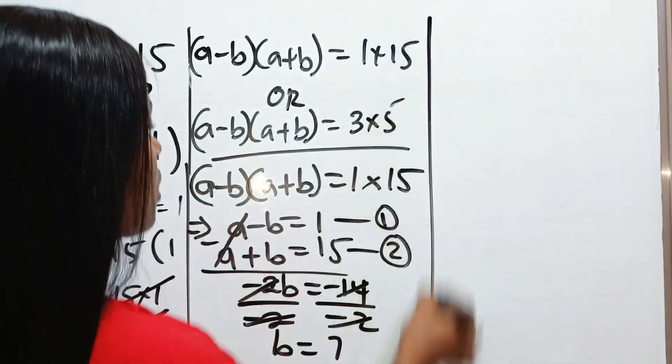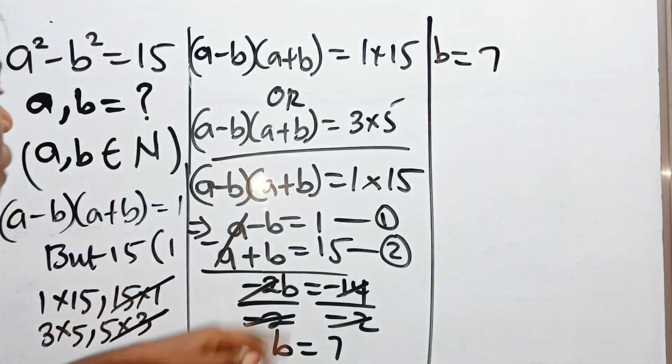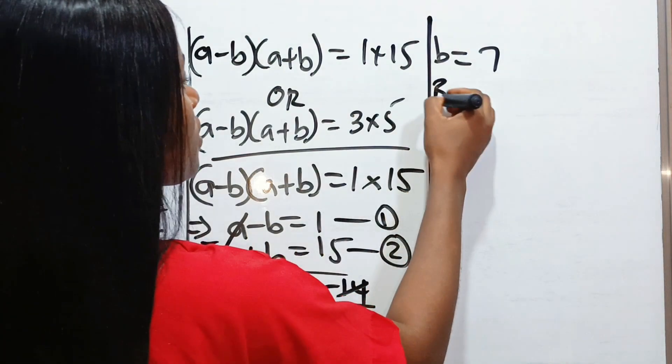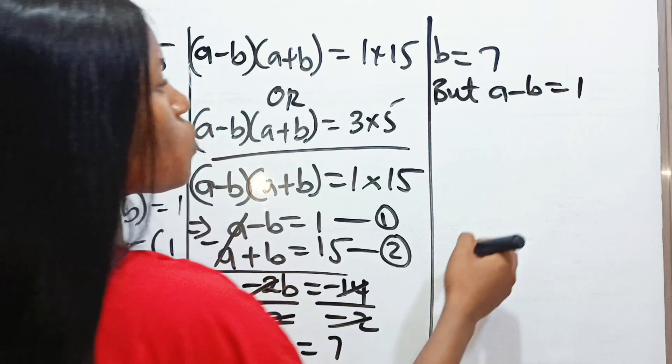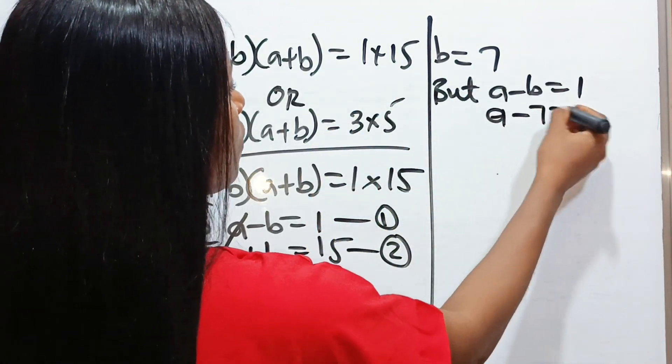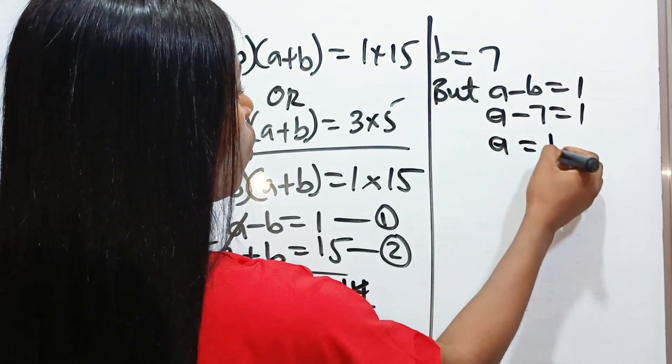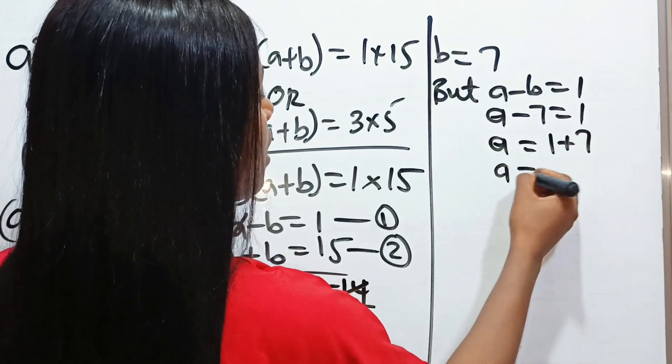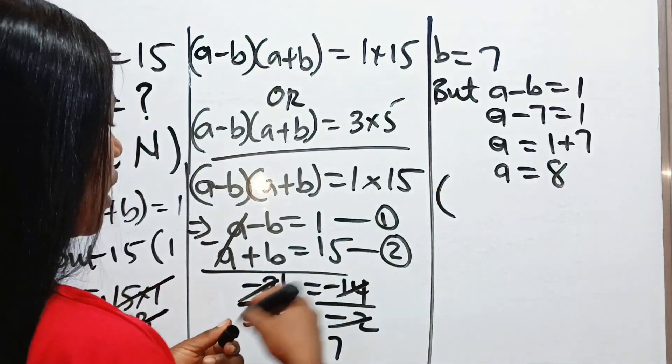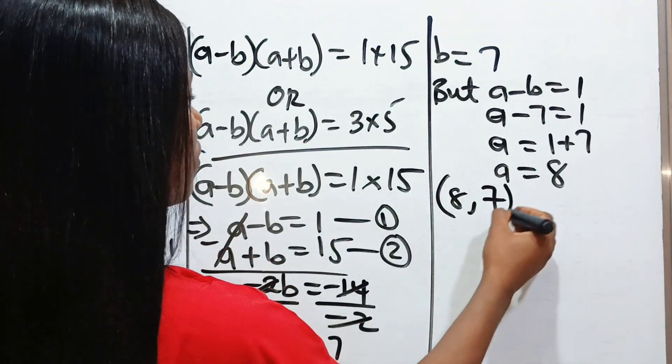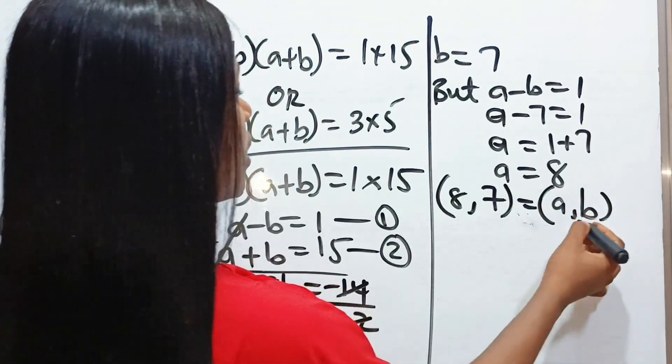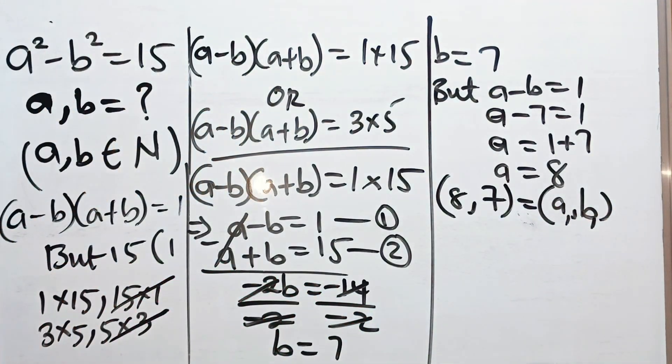If b is equal to 7, from the first equation, we have a minus b is equal to 1, but a minus b is equal to 1 according to equation 1. So a minus 7 is equal to 1. That means that a is equal to 1 plus 7. That means a is equal to 8. So the first value of a and b is 8 comma 7, which is equal to a comma b. This is the first value of our a and b.